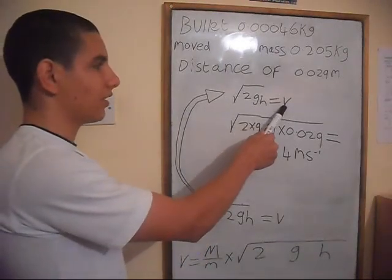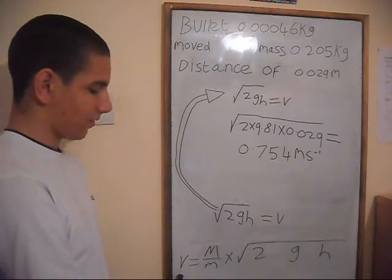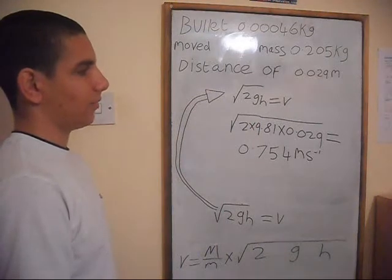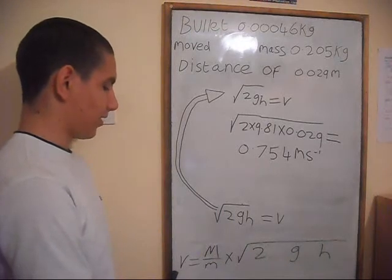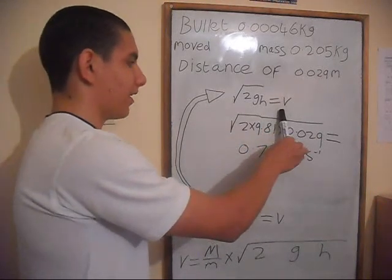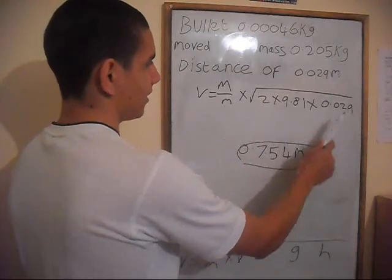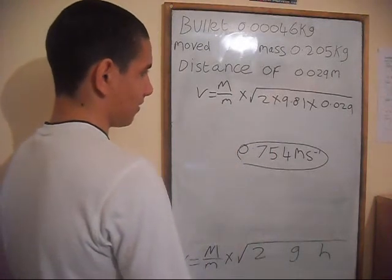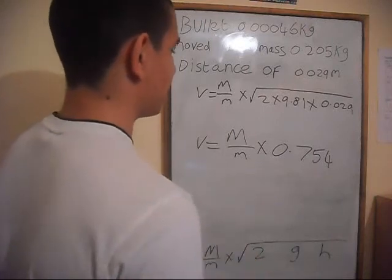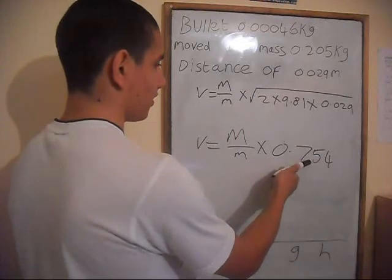You can see that √(2GH) = v is the equation for the block's velocity. But this V here is the velocity of the bullet, and this V is the velocity of the block that the bullet hit. What we want to calculate is the velocity of the bullet. So from the velocity of the block, we substitute the original equation to derive the bullet's velocity.